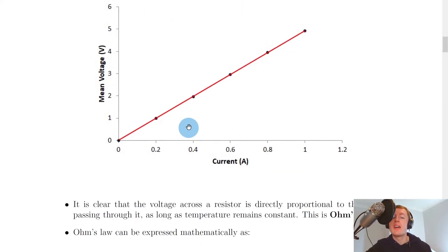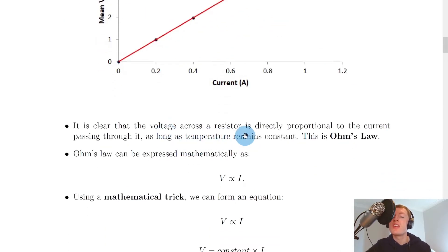I've plotted mean voltage against current and you'll see we get a straight line through the origin. From this graph, it's clear that the voltage across a resistor is directly proportional to the current passing through it, as long as temperature remains constant. We say that this is Ohm's Law.